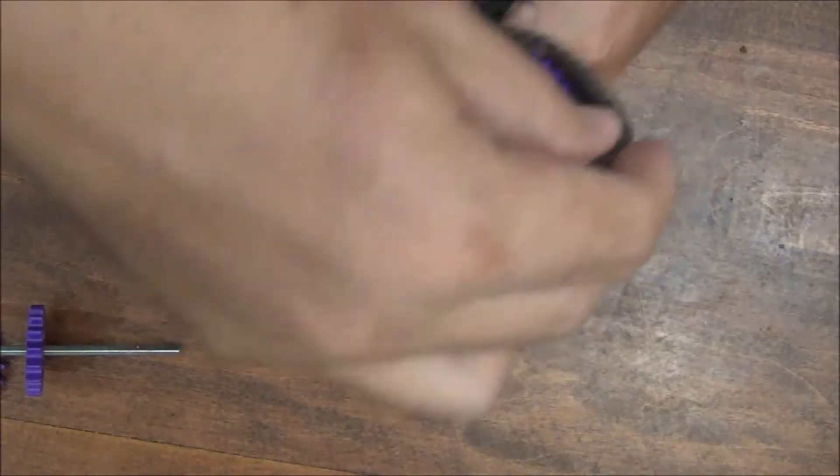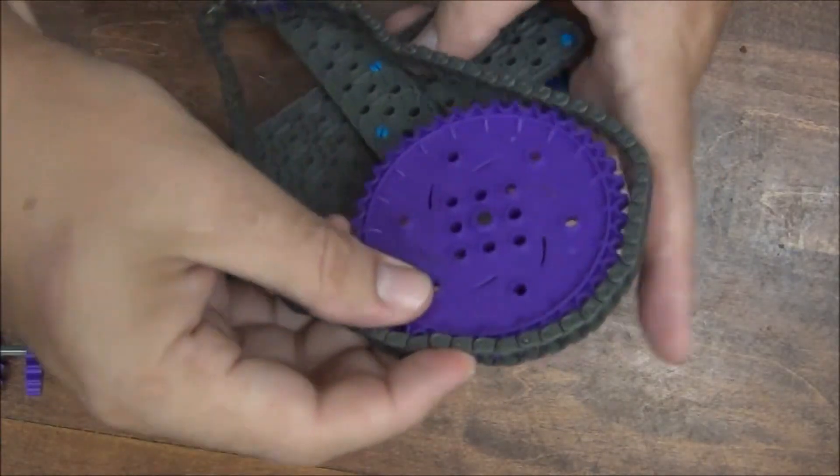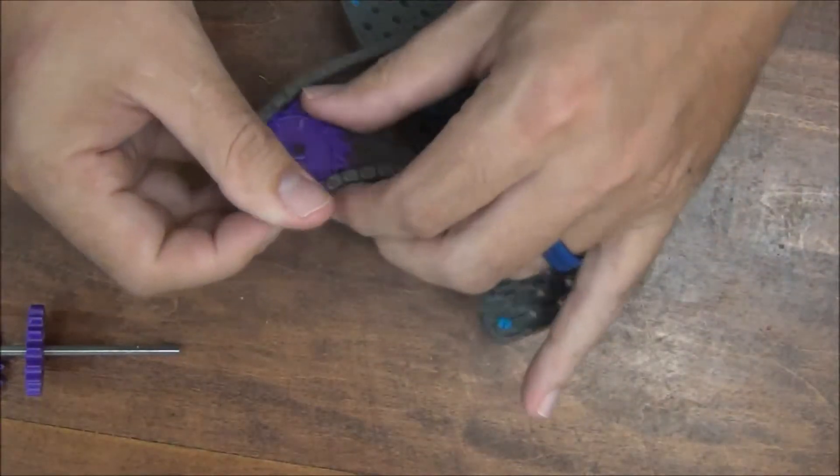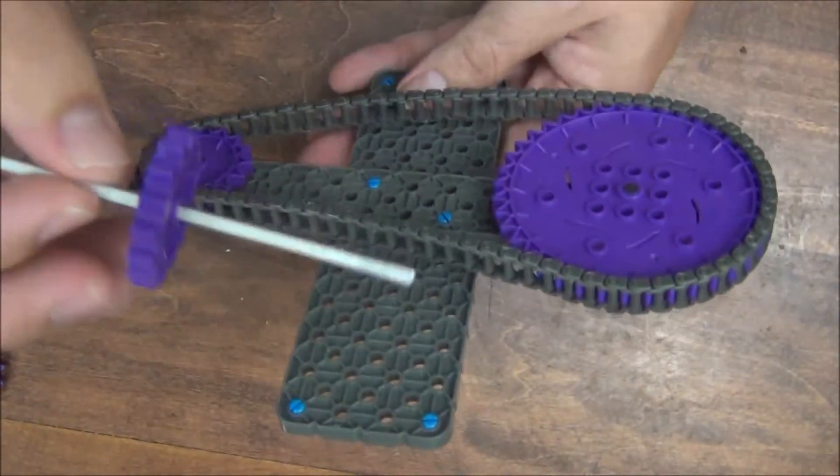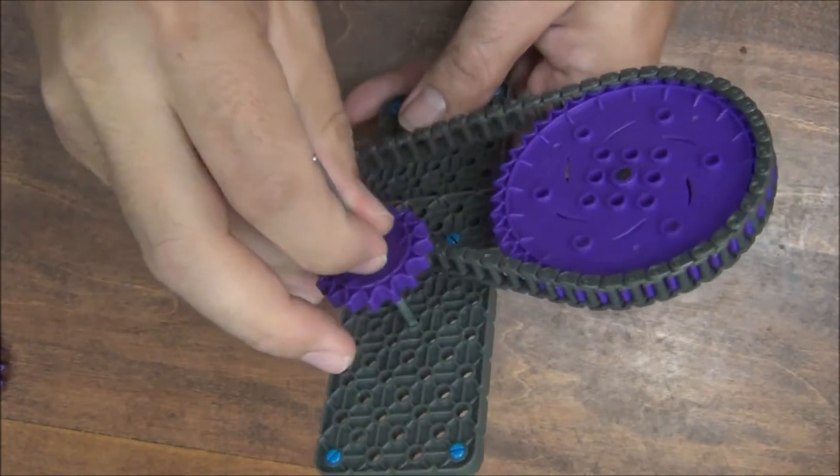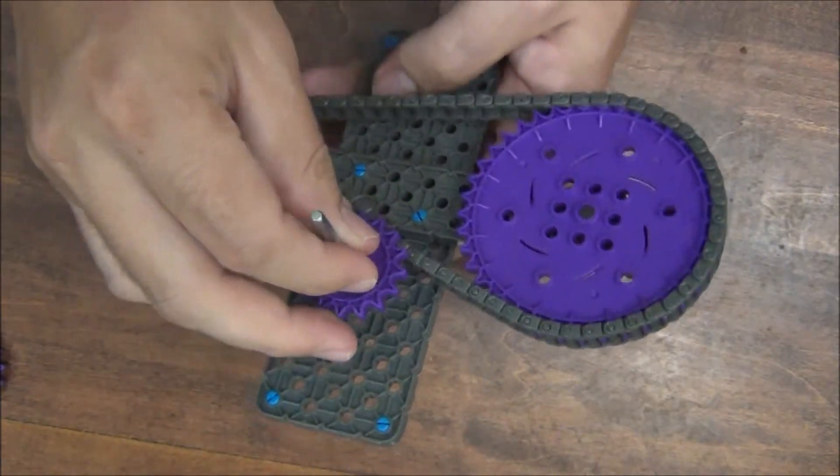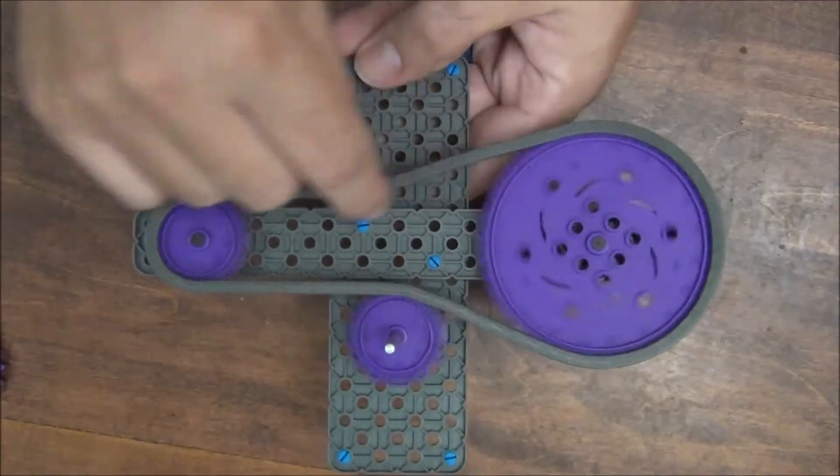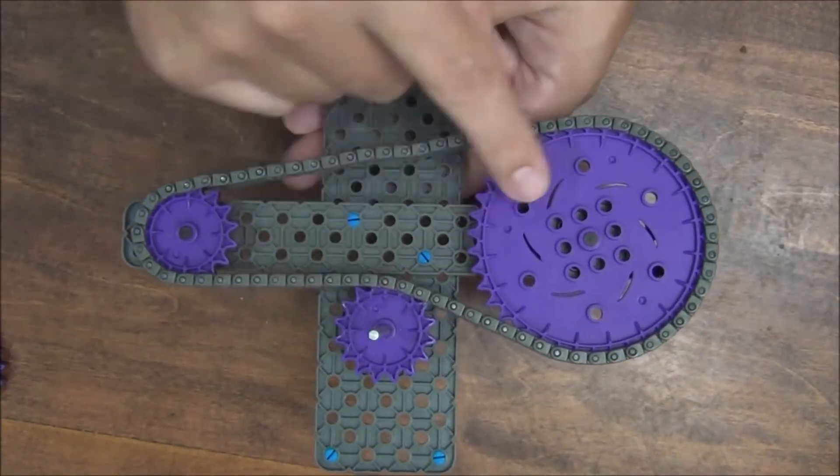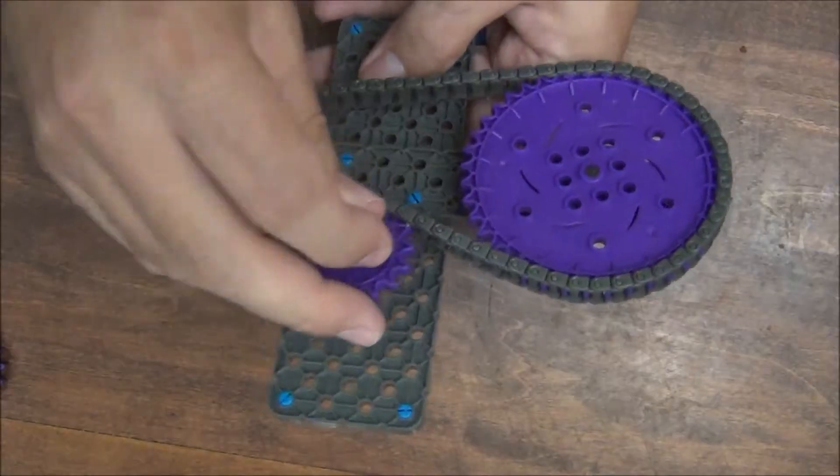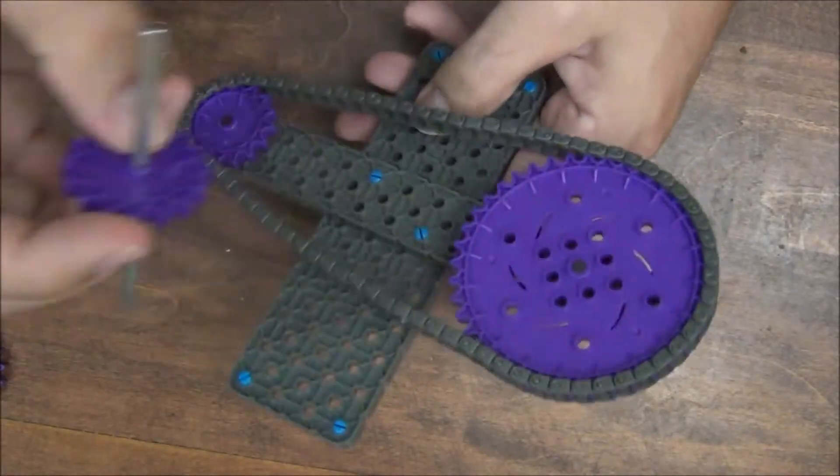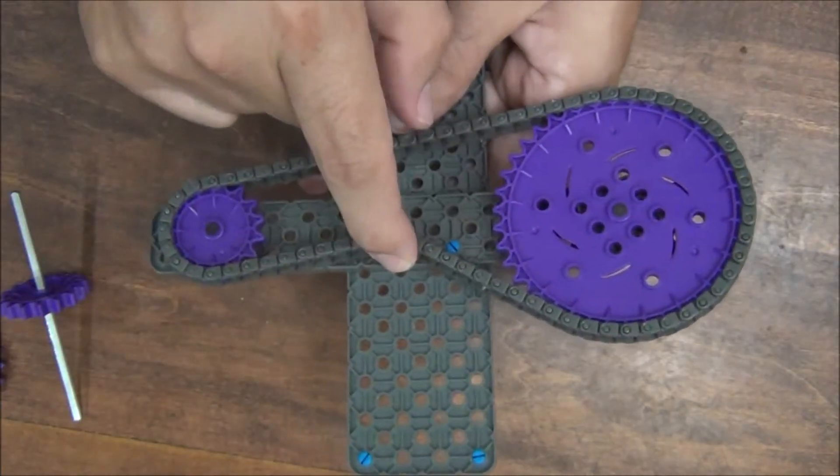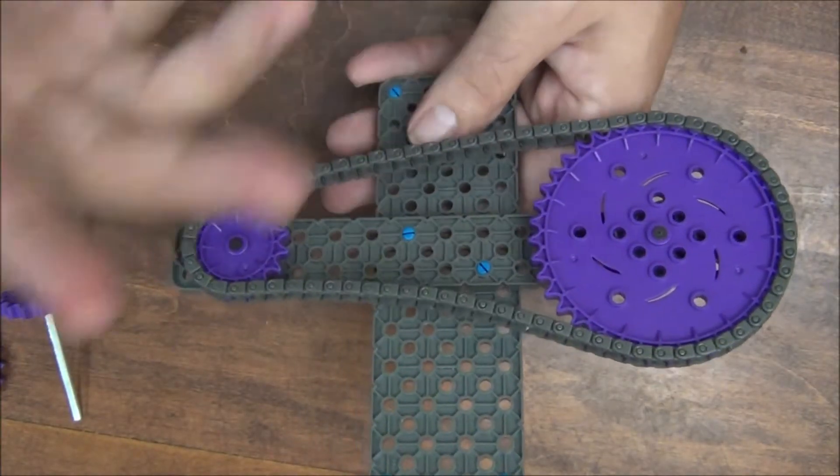But by adding that tensioning sprocket on the outside, it actually allows us to build a system where the chain can't get off of our sprockets. So it creates a second reason why we would use one of these in a chain drive. Now, if you don't need this, you could certainly take this chain, remove a link or two, and shorten it to make it tight. But again, it's a different thing to think about.